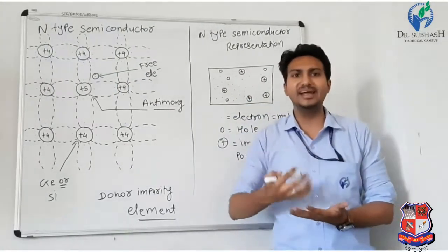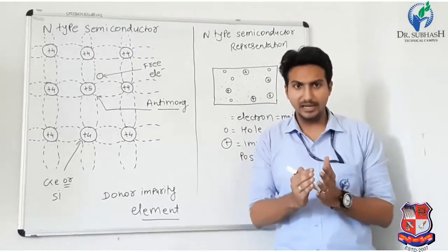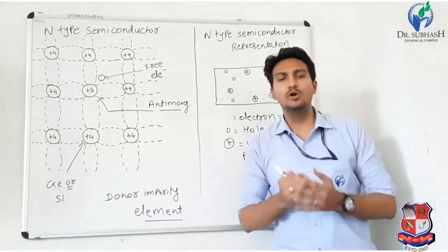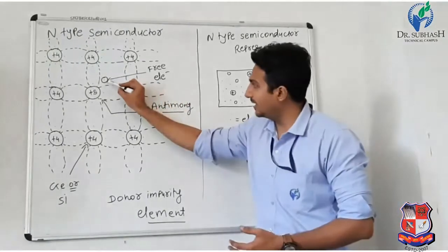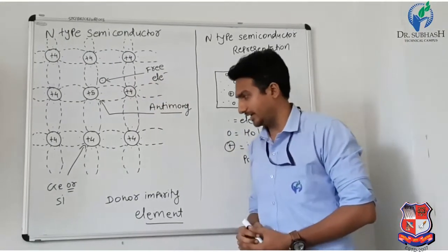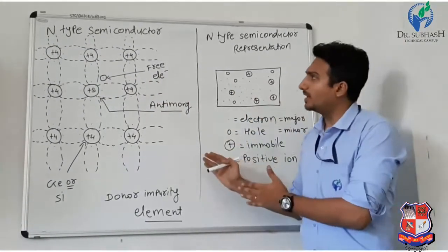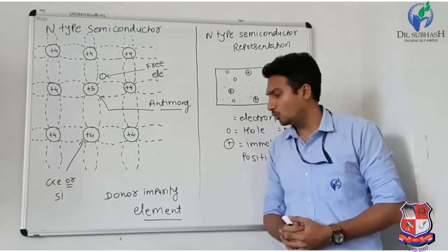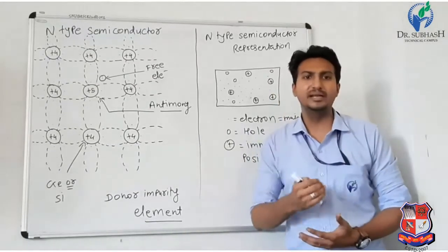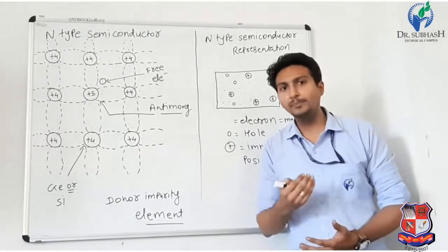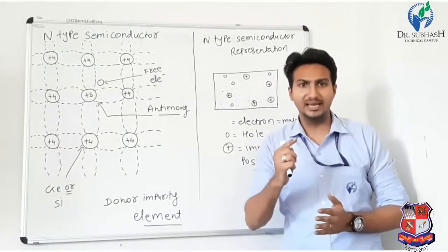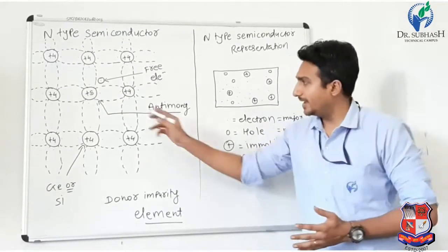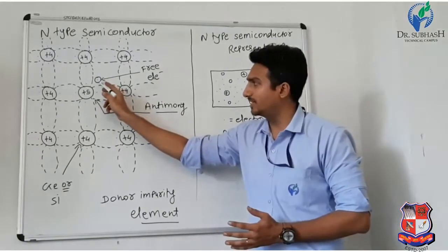But one electron is a free electron. There is one electron in excess because there are 4 electrons bonding but antimony has 5 electrons total. This excess electron becomes free.